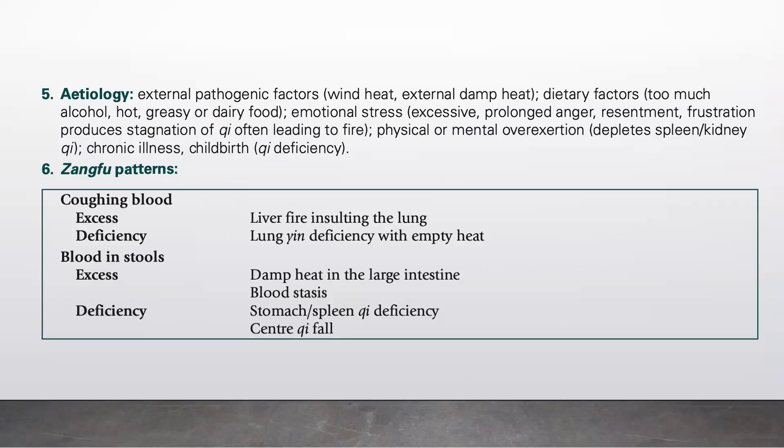Regarding etiology, external pathogenic factors include wind heat and external damp heat. Dietary factors include excessive alcohol, hot, greasy, or dairy foods. Emotional stress — such as excessive prolonged anger, resentment, and frustration — produces stagnation of qi and often leads to fire. Physical and mental overexertion depletes spleen qi, and chronic illness or childbirth can also cause qi deficiency.